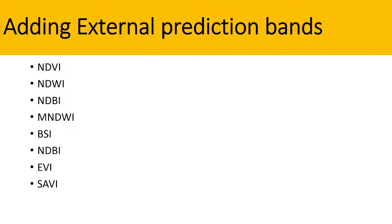For example, you can add the NDVI, NDWI, MNDWI, BSI — mainly the Bare Soil Index — as well as the NDBI, which is the Normalized Difference Buildup Index. You can also add the EVI, which is the Enhanced Vegetation Index, and the SAVI, or Soil Adjusted Vegetation Index. You can add many other indices as prediction bands in your algorithm, and we can easily get higher accuracy.